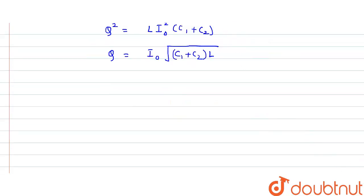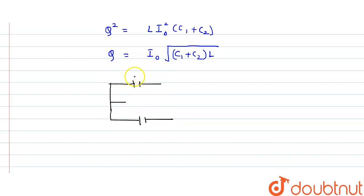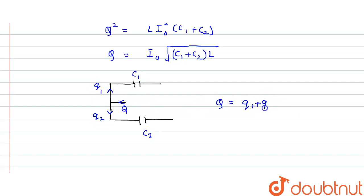Now let us redraw our circuit just for the capacitor part. This is our C1, this was our inductor part, and this is our C2. So what is the charge flowing here — in the maximum case it equals Q. Here the charge going through is Q1, and the charge going through the other branch is Q2. So Q equals Q1 plus Q2. Since C1 and C2 are connected in parallel, they are in parallel and the potential difference would be the same.